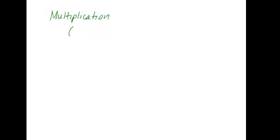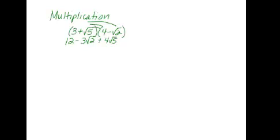Let me make a binomial that has some radicals: (3 + √5) multiplied by (4 - √2). We're going to multiply this just as we would any binomials. We get 3 times 4, which is 12; 3 times negative √2, giving -3√2; 4 times √5, giving +4√5; and then √5 times √2 — remember, you're allowed to multiply radicals with different radicands as long as they have the same index, and here they do — giving minus √10. Looking at the result, we have an integer, √2, √5, and √10, which can't be simplified, so we're done.